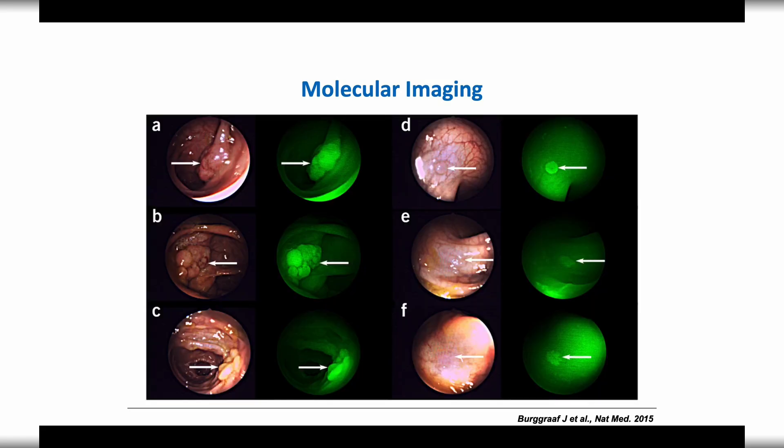Here Berggrath showed some instances where, with Sanin molecular imaging methods, he was able to correlate these polyps.